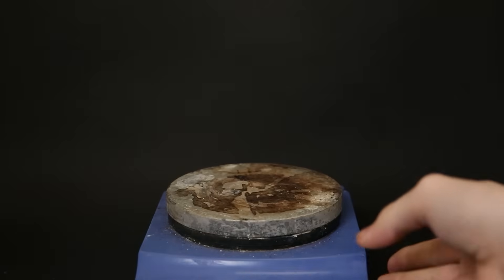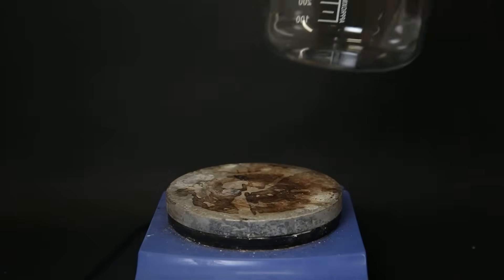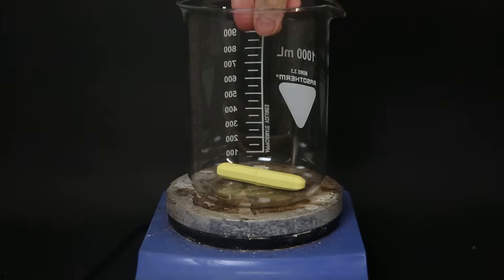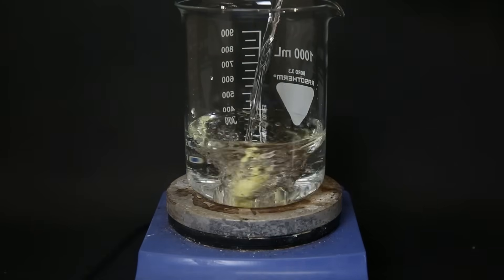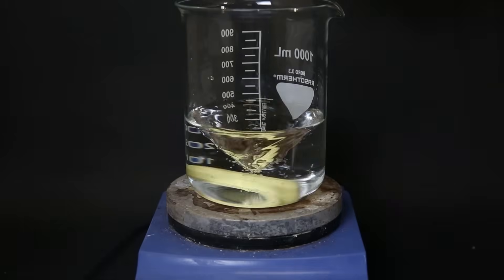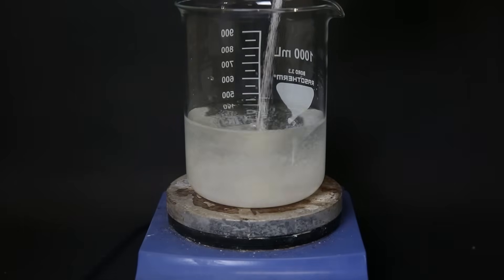Now I need to prepare the reactants for this procedure, so I set up a large beaker and drop in a stir bar. I turn on the stirring and I add 500 ml of water. Now I slowly add in a bunch of sodium hydroxide.